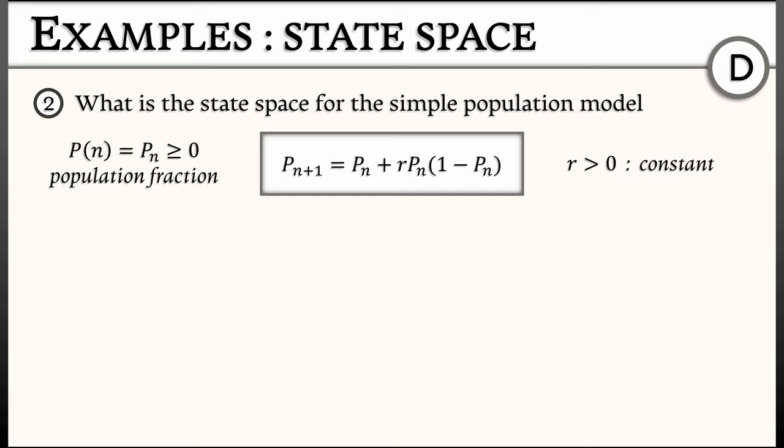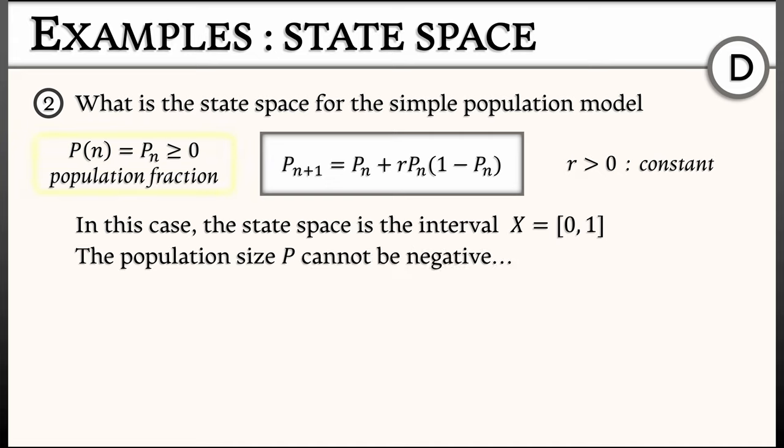This constant r is also positive. We'll be taking a look at models like this later on. For now, in this case, the state space is going to be the interval from 0 to 1 because this population size p represents a fraction, and it definitely can't be negative.